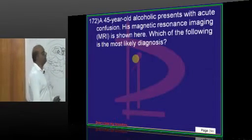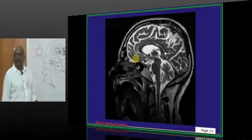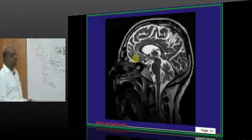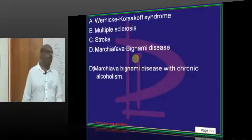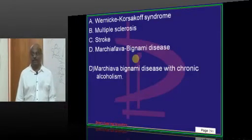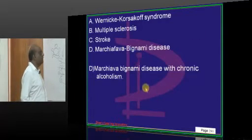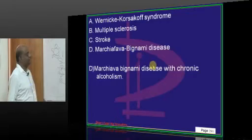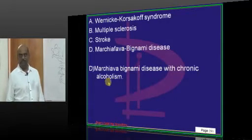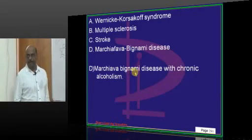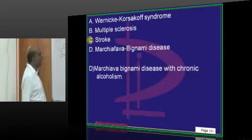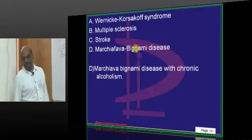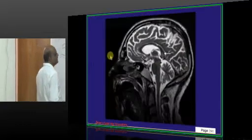A 45-year-old with acute contusion — MRI is shown. The most likely diagnosis is Marchiafava-Bignami disease. This is a very favorite question of examiners. It occurs in chronic alcoholism, and Marchiafava-Bignami disease is what you need to remember when it comes to alcoholism.